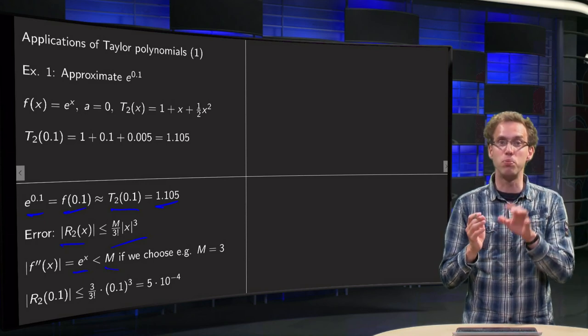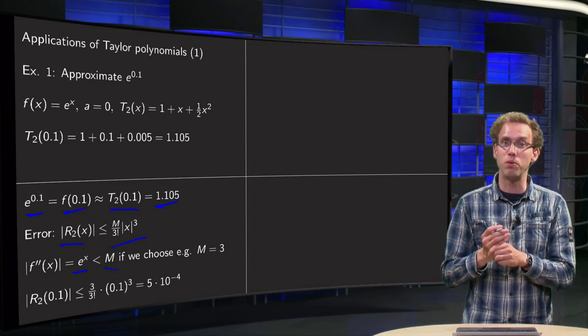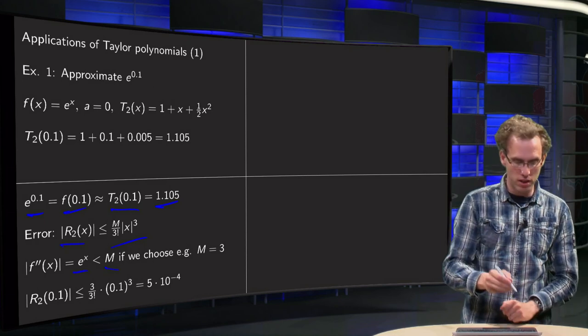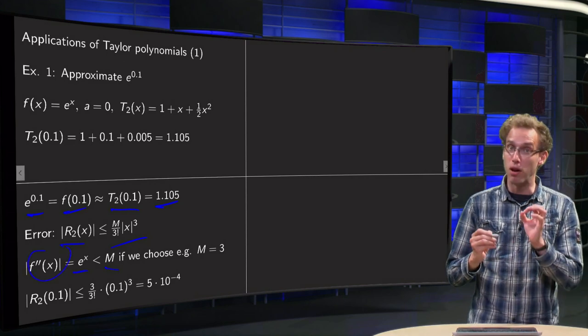So I know that this number M is certainly below 3, e to the power 1 would be 2.7, we are even below 2.7, so certainly below 3. So if we choose 3 we will be fine, but this f double prime will certainly be below 3.